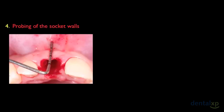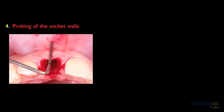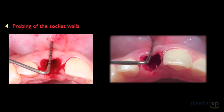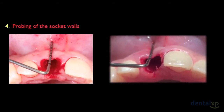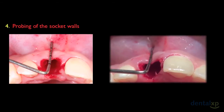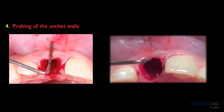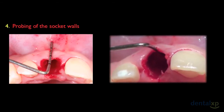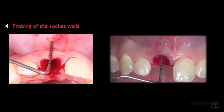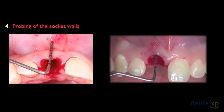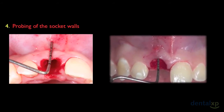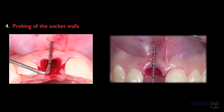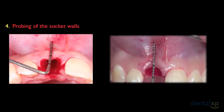The following step is probing of the socket walls to assess the extent of the bone damage. We will assess the defect in height and width. We can confirm here a total absence of the buccal bone wall.